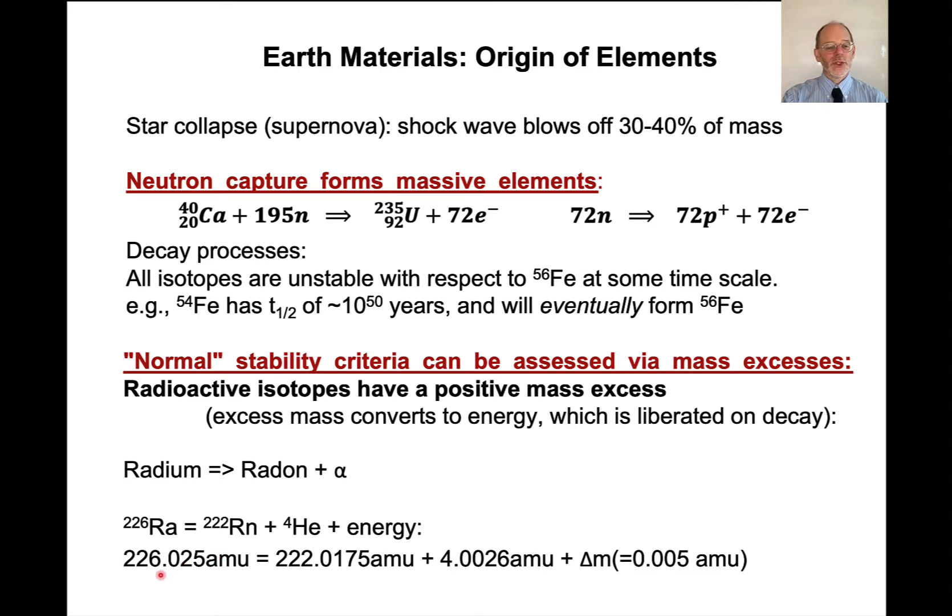Well, the mass of radium 226, that specific isotope of radium, not the element radium, but this one isotope of radium, is 226.025 amu, atomic mass units. The mass of radon is 222.0175 amu, and the mass of helium is 4.0026 amu. And if you add these two numbers up together, you don't get this number. There's a mass excess. And that mass excess, the amount of mass that you have to add to this side of the equation to balance this mass is 0.005 amu.